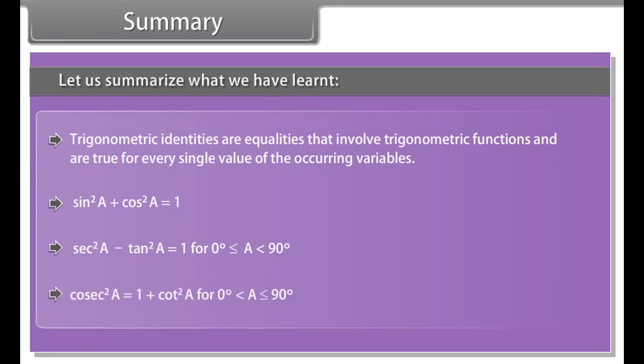Let us summarize what we have learned. Trigonometric identities are equalities that involve trigonometric functions and are true for every single value of the occurring variables. Sin square a plus cos square a is equal to 1; sec square a minus tan square a is equal to 1, for 0 degree less than or equal to a less than 90 degree. Cosecant square a is equal to 1 plus cot square a, for 0 degree less than a, which is less than or equal to 90 degree.